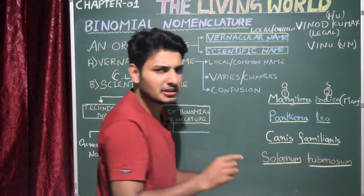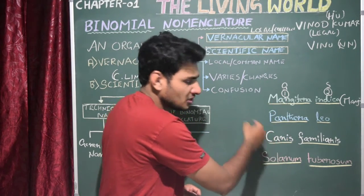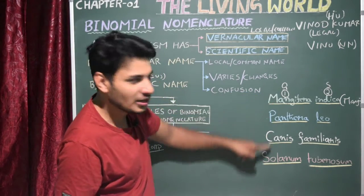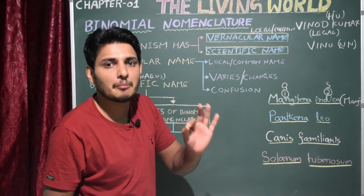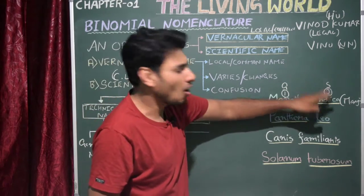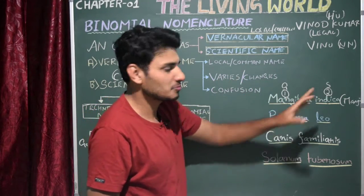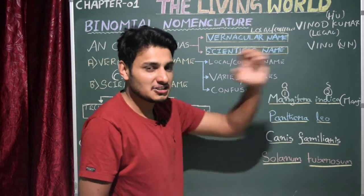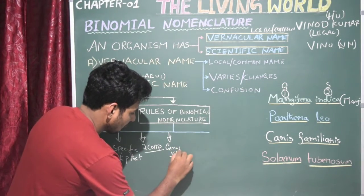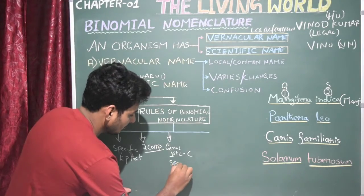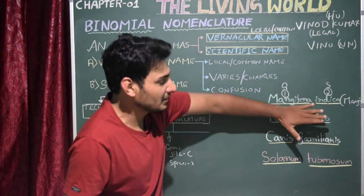The second important rule: when you write the generic name, the first letter should be in capital — you can see M, P, C, S are all in capital letters. So the first letter of the genus name should start with a capital letter. The species name, on the other hand, should be in small letters. So: genus first letter should be capital, whereas species should be in small letter.